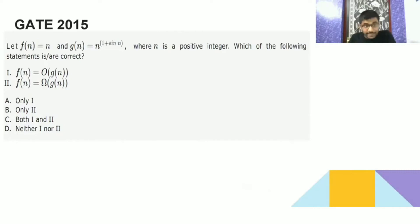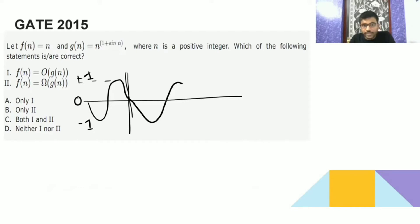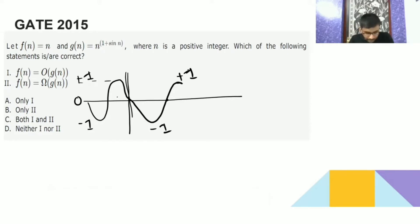So f(n) is n and g(n) is 1 plus sin(n). If you see the equation of a sine, the sign values go like this — negative, then positive, then negative, then positive. Sin is going to vary its value from minus 1 to plus 1. Sat and Amina are giving the correct answer — D is the correct one.